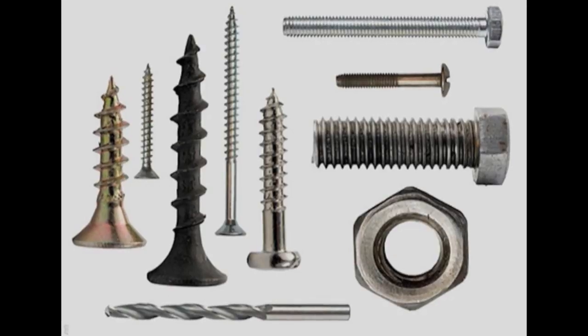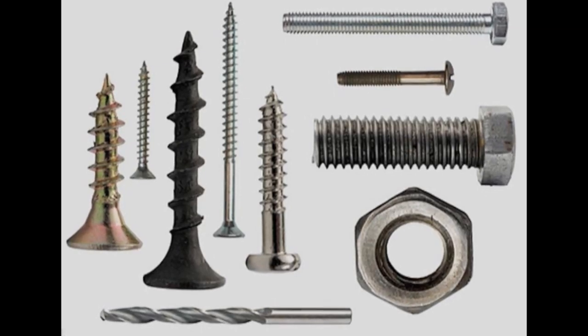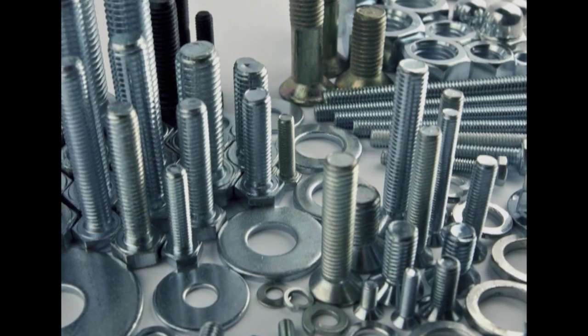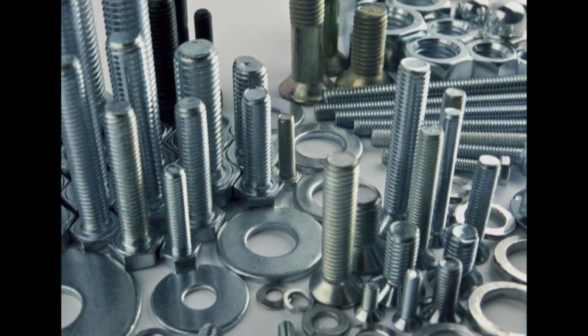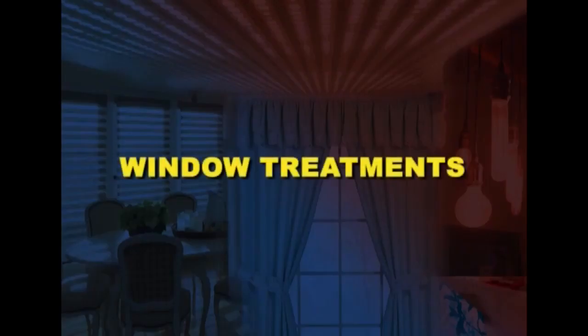Screws, nails, hinges and bolts and nuts are used in fitting furniture. A fastener is a hardware device that mechanically joins or affixes two or more objects together. In general, fasteners are used to create non-permanent joints — that is, joints that can be removed or dismantled without damaging the joining components. Welding is an example of creating permanent joints in furniture.